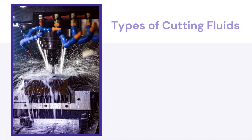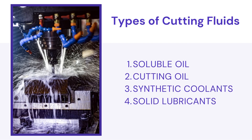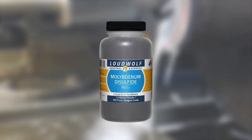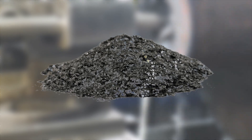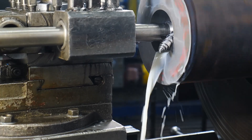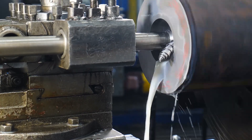The last one on the list is solid lubricant. This means it is in the solid phase — soap bars, molybdenum disulfide, graphite, and wax sticks can be used as solid lubricants.